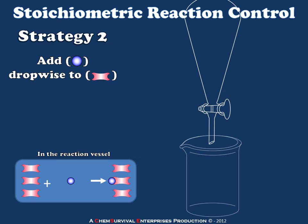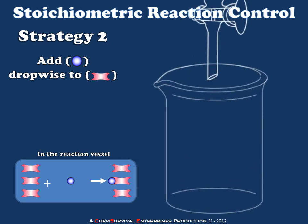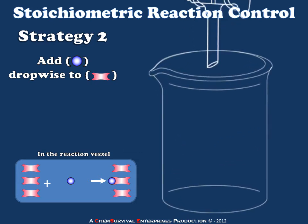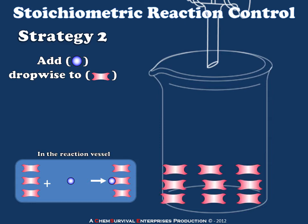Let's take a look at a different strategy. Rather than combining two equimolar aliquots rapidly, we're going to think about mixing one into another very slowly. In this example, let's assume I have a solution of my doubly-reactive material in a beaker, and my singly-reactive material is contained within the separatory funnel above.